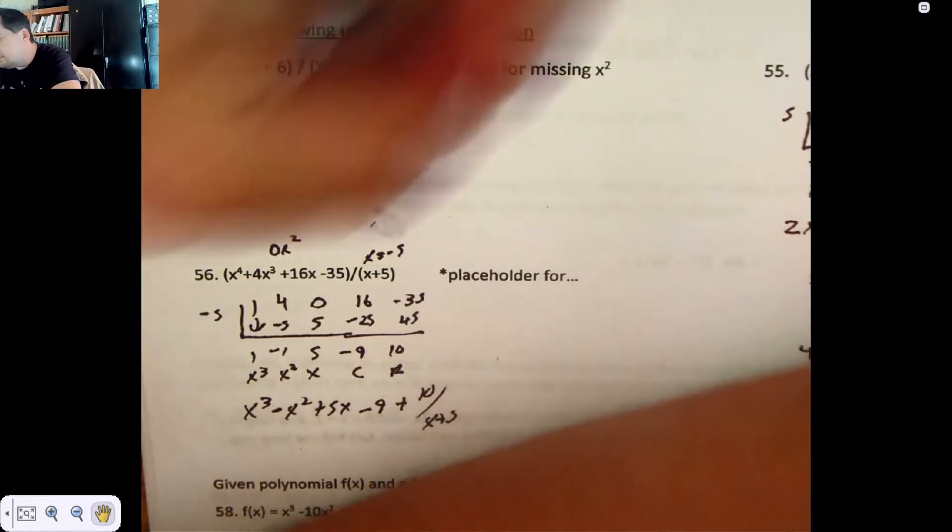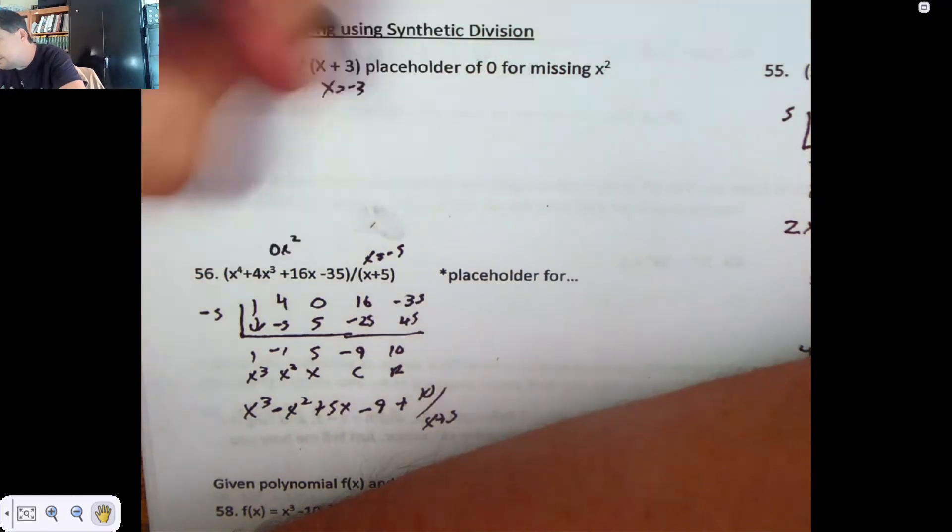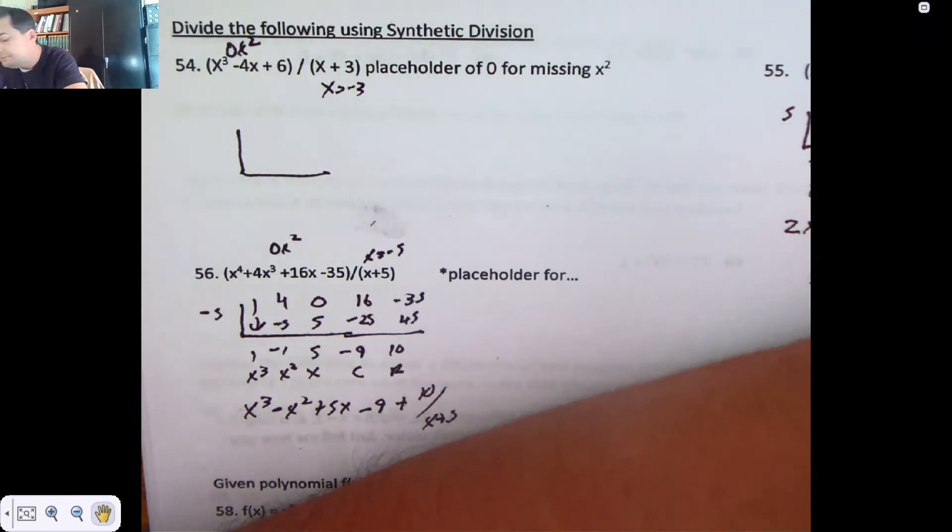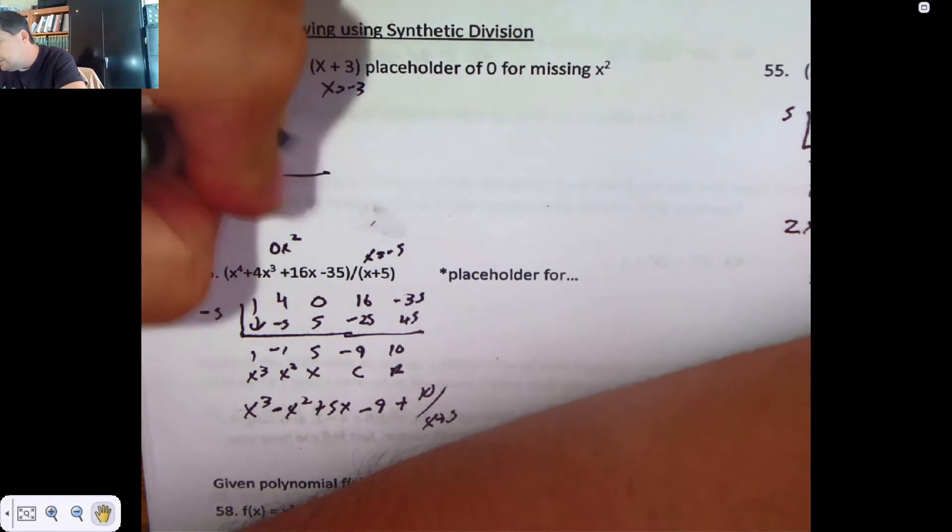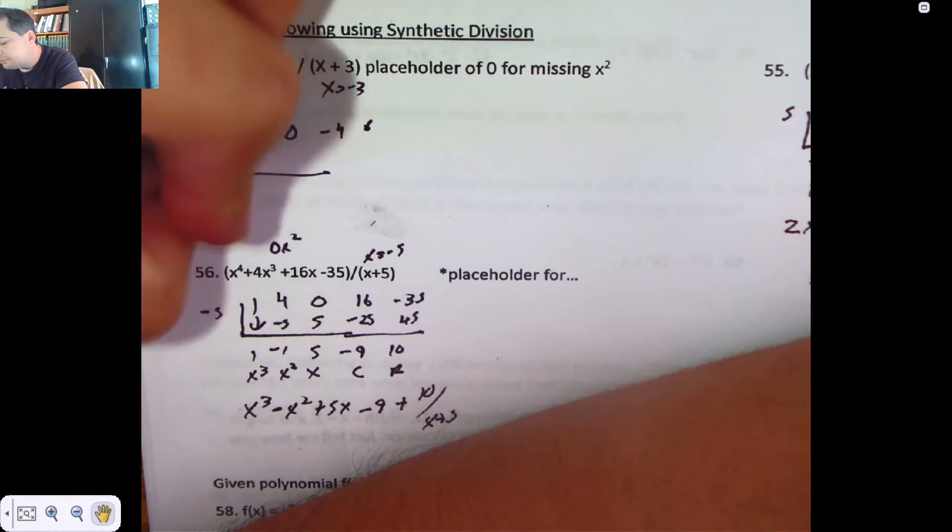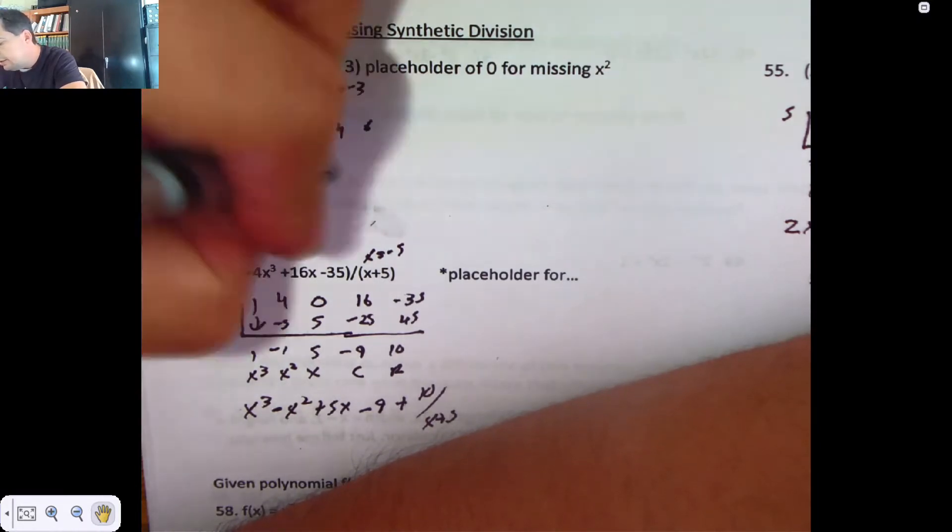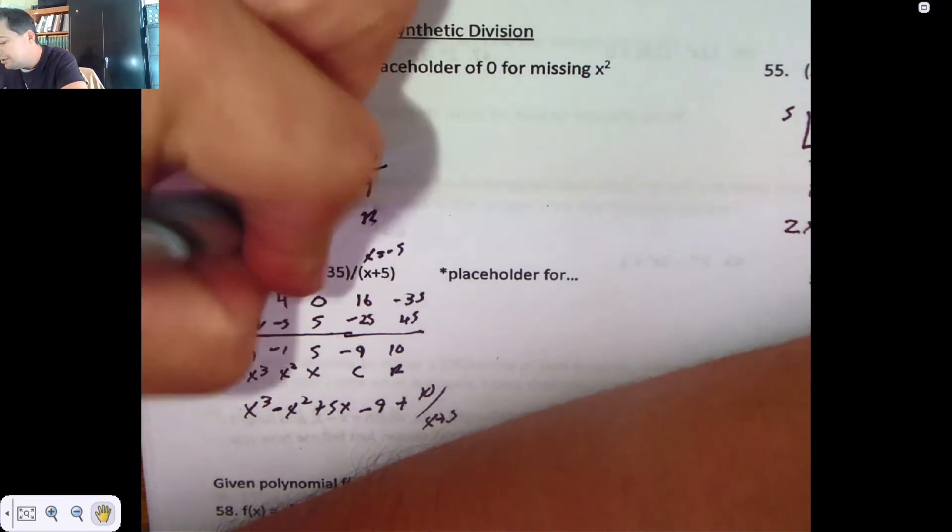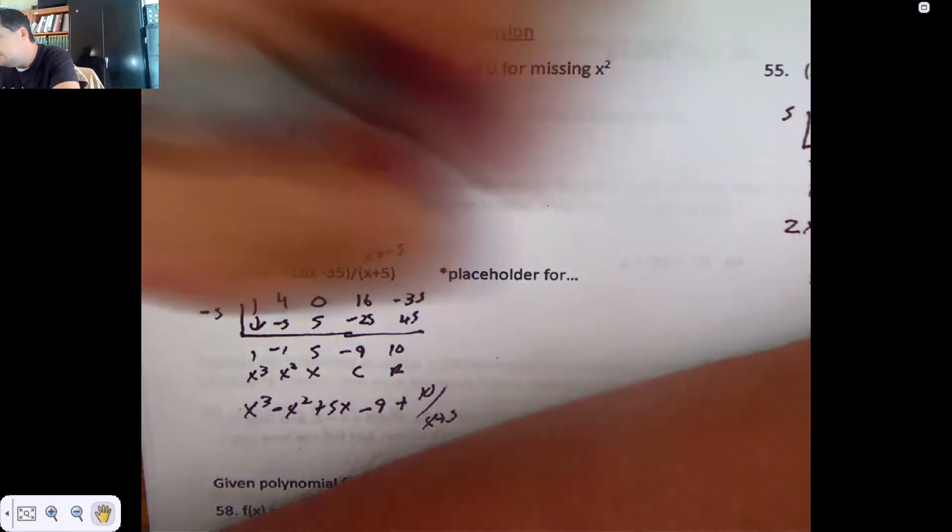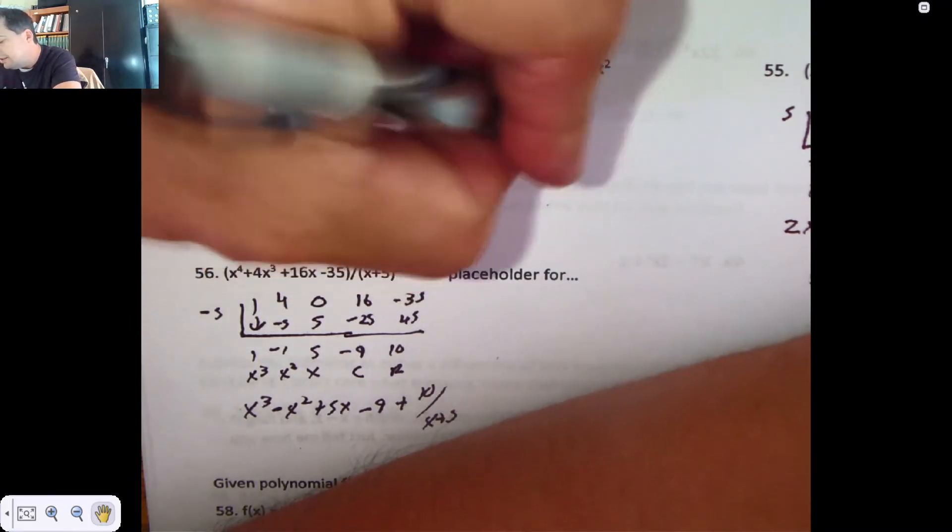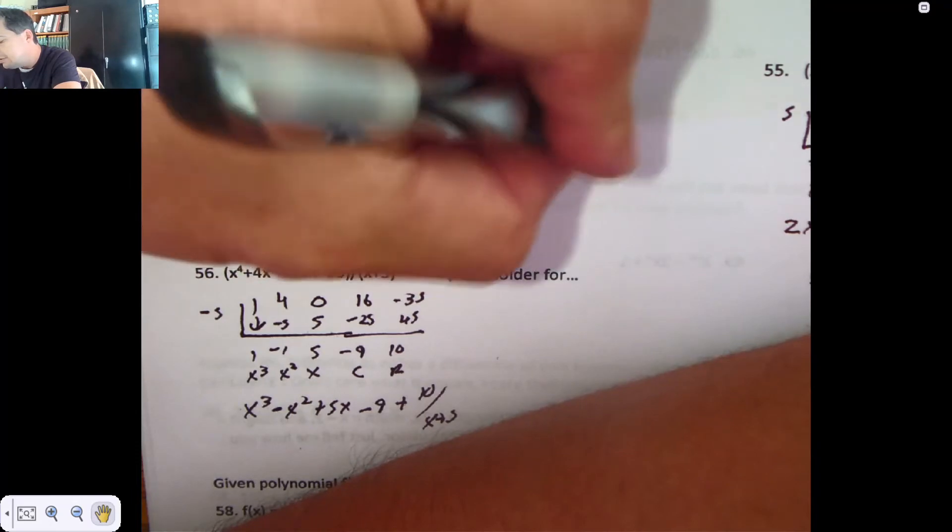Alright. This would mean that x is negative 3, and I do need placeholders because there are no x squareds. I can't make a jump like that. There's a 1, a 0, a negative 4, and a 6. Those are my coefficients. And I drop, and I multiply and add. And I multiply and add. And I multiply and add. Remainder, constant, x, x squared. So what I'm left with is x squared minus 3x plus 5, take away 9 pieces of x plus 3.